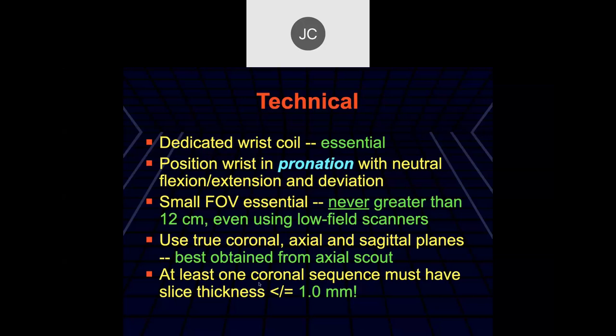At least one sequence should have a slice thickness of one millimeter or less. This used to be best done at low field because you could do gradient echo sequences and get very high 3D resolution with good contrast. At higher fields, gradient echo images don't give very good contrast because there's too much susceptibility artifact from the trabecular bone. But nowadays, we can get by with about 1.5 to 2 millimeter thin minimally skip images, especially at 1.5 and 3T.